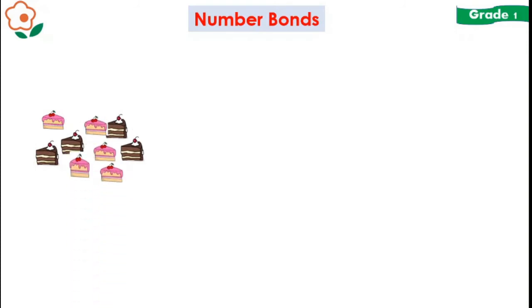So here you can see some pastries. Some are strawberry and some are chocolate. So let's count them. How many pastries can you see? There are 1, 2, 3, 4, 5, 6, 7, 8, and 9. There are 9 pastries.